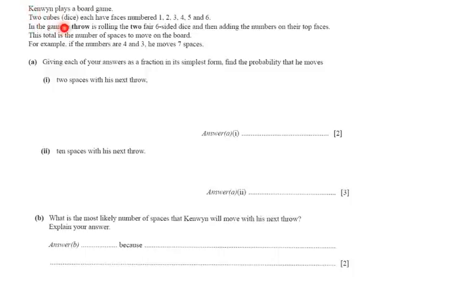What is going on? Kenwin is playing a board game. Two cubes, dice, each have faces numbered 1, 2, 3, 4, 5, 6. In the game, a throw is rolling the two fair six-sided dice and then adding the numbers on their top faces. So imagine playing a game, you're rolling the two dice at the same time. You have a 4 and a 3, for instance, that means you will move your little car seven steps. This total is the number of spaces to move on the board. For example, if the numbers are 4 and 3, you move seven spaces. If I roll a 1 and a 6, I also move seven spaces.